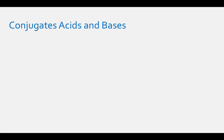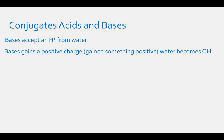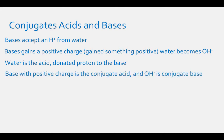A base is something that can accept an H+ ion, usually from water. Then the base gains a positive charge because it has gained something positive, and the water becomes OH-. In this case, the water is the acid because it has donated the proton to the base. The base with the positive charge is the conjugate acid of the reaction, and the OH- is the conjugate base of the reaction.